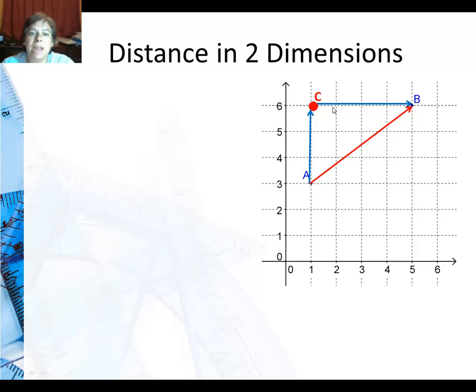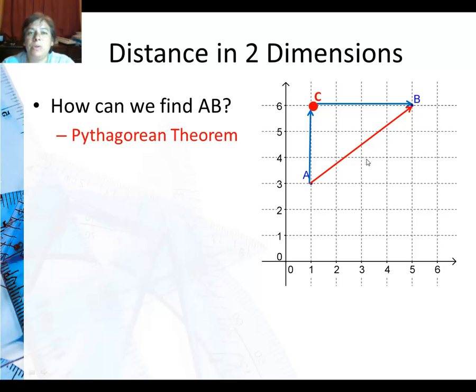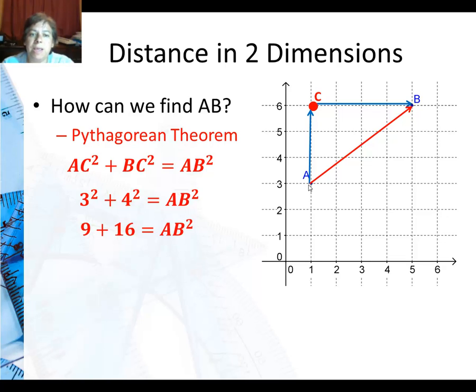Well, then how can we find AB? We'll use the Pythagorean Theorem. Why can I use the Pythagorean Theorem? Because these lines are perpendicular to the horizontal grid lines here. Which means that's a right angle and this is a right triangle. So I'm going to use this leg AC squared plus BC squared equals AB squared. Substituting in the values I get 3 squared plus 4 squared equals AB squared. 9 plus 16 equals AB squared. Or 25 is AB squared.